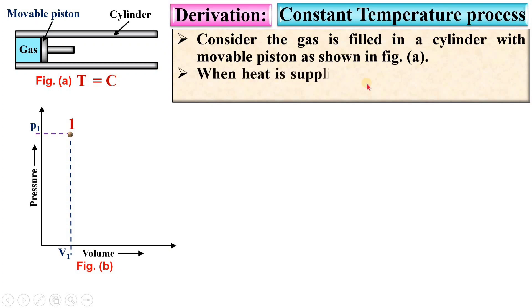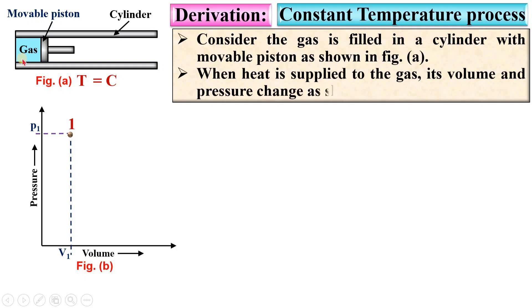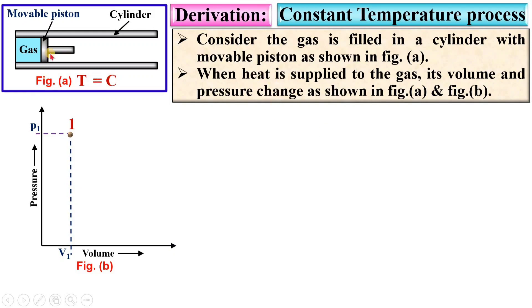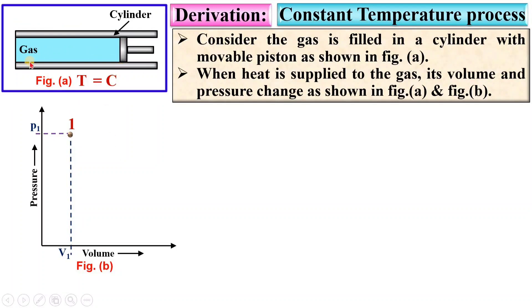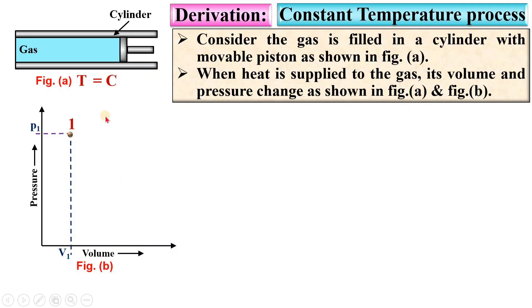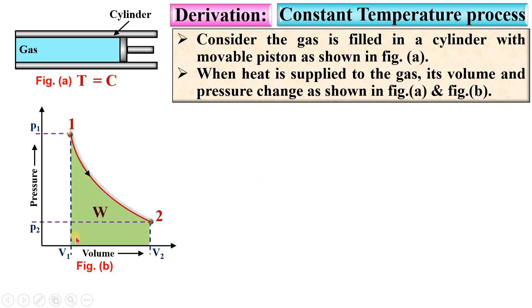When heat is supplied to this gas, its volume and pressure change as shown in Figure A and Figure B. The volume changes and there is an effect on the pressure also. Let us call this State 2 on the PV diagram, with corresponding pressure P2 and volume V2. This 1-2 process is known as the constant temperature process, and the area below this line on the PV diagram represents the work done during the constant temperature process 1-2.